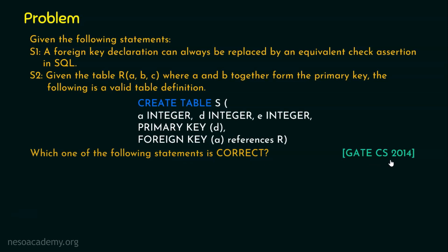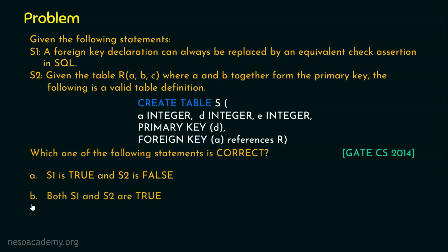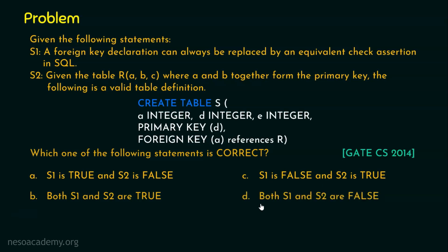This question was part of GATE Computer Science in 2014. The options are: Option A — Statement 1 is true and Statement 2 is false; Option B — both statements are true; Option C — Statement 1 is false and Statement 2 is true; Option D — both Statement 1 and Statement 2 are false.